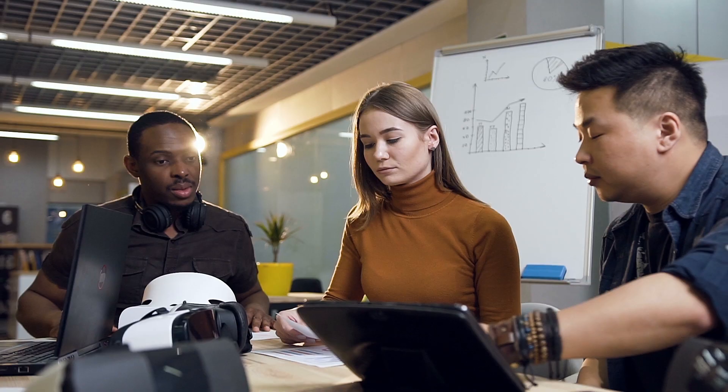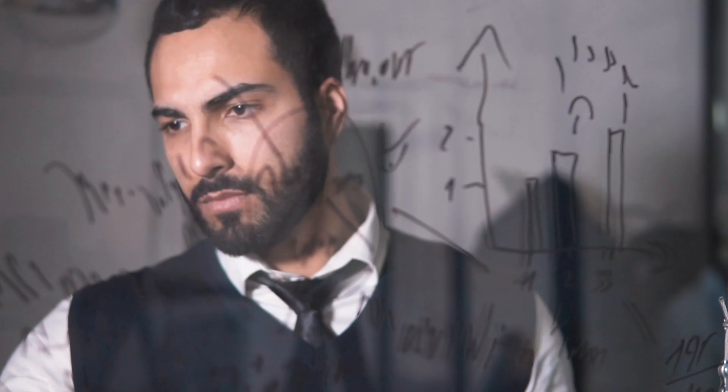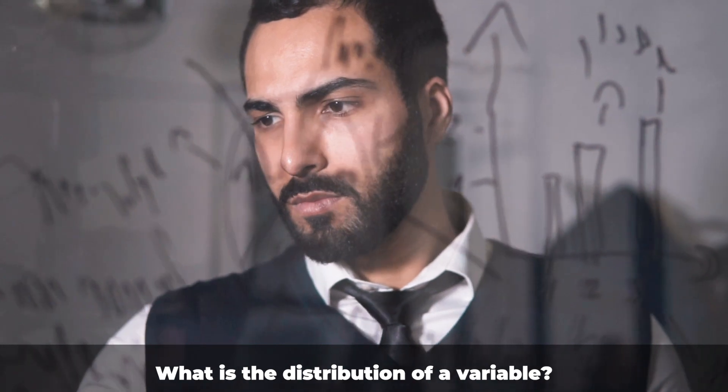We know that we have variables that we have measured, we have a bunch of data, and we want to be able to tell somebody what is in that data. We have thousands of observations and we want to tell somebody what is in those observations without just making them look through them one at a time. So when we're doing this, we're going to need to think about what is the distribution of a variable — that's the key idea, that variables have distributions.